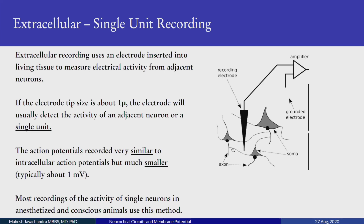Many thousands of experiments in conscious and anesthetized animals have used this technique, simply because it is a much more robust technique — the animal can move and you can still record the spikes. If the electrode is inside the cell, even slight movement can damage the nerve or cause the electrode to slip out. So there are certain advantages of extracellular recording.